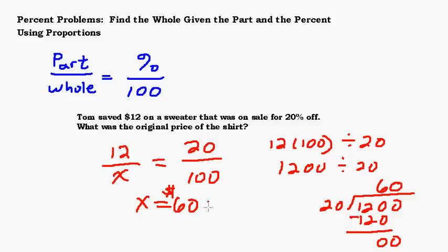So this sweater was $60 and it was 20% off. Let's see, does that make sense that it would be $12? You know 10% of 60 would be 6, so 20% would be twice as much. 20% of 60 would just be 12. So that makes sense. That's a good answer. It checks out. Always want to make sure that makes sense.